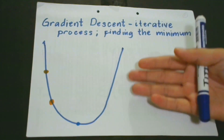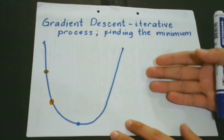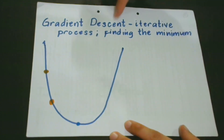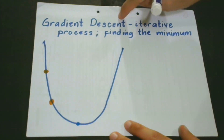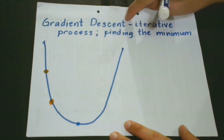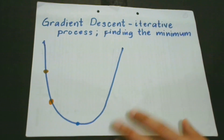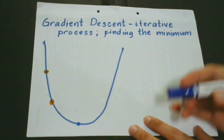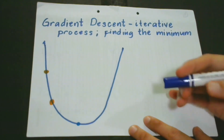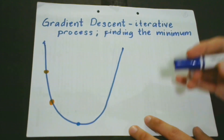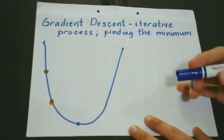Gradient descent is an iterative process that is used to find the minimum for a certain function. It is one of the most popular algorithms for optimization and provides the most common method for optimizing neural networks.